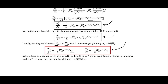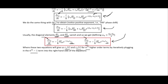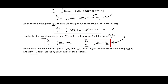We can find c sub a and c sub b to the nth order by iteratively plugging in the (n−1)th order term into the right-hand side — for instance, plugging the zeroth-order c sub b in to find the first-order c sub a. These two boxed equations are how we find the probability amplitudes for our time-dependent Schrödinger equation. We'll explore this in more detail in the next few videos.